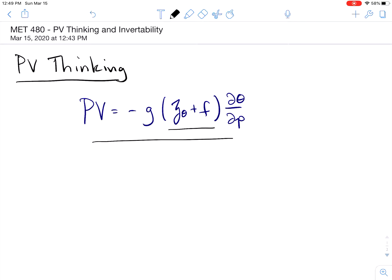And so what we found was that this equals a constant under certain conditions. Those conditions are when the atmosphere is both adiabatic and frictionless.